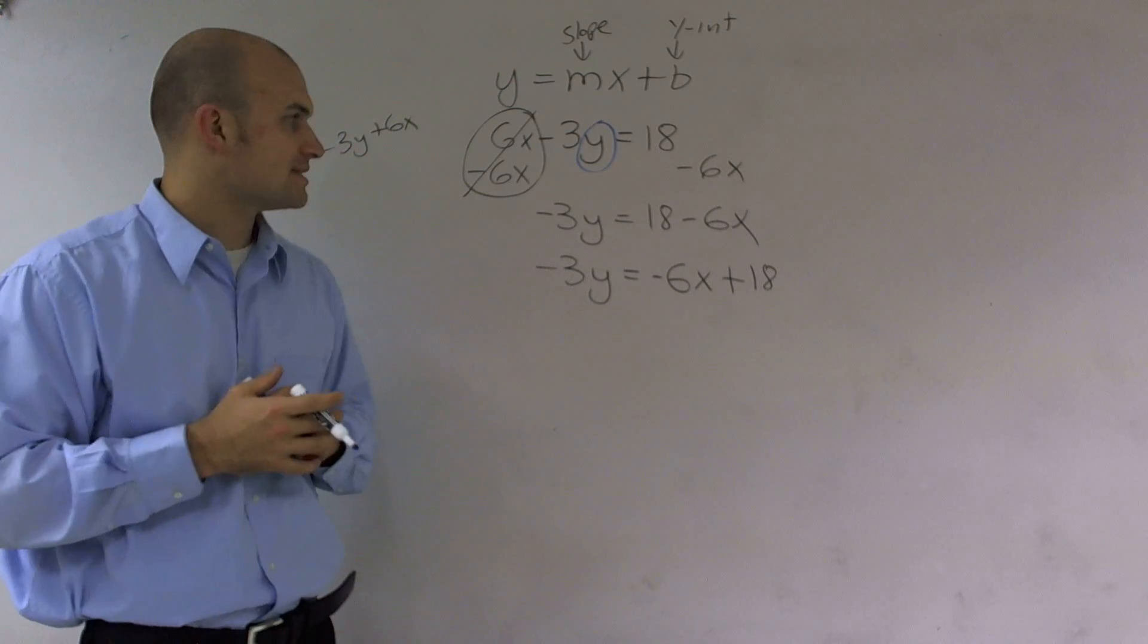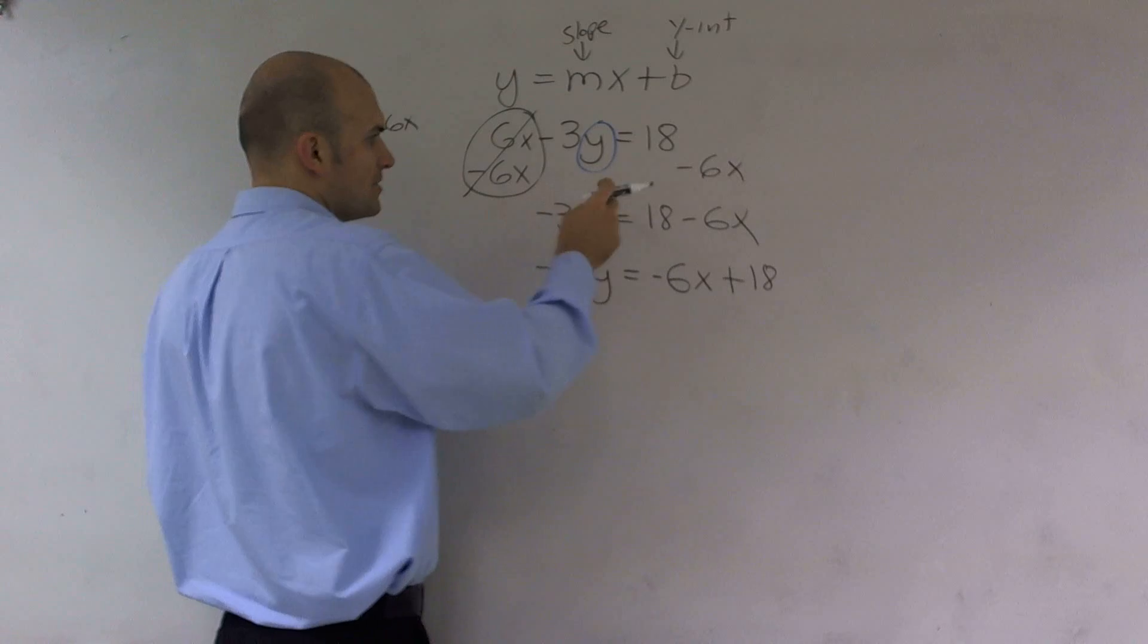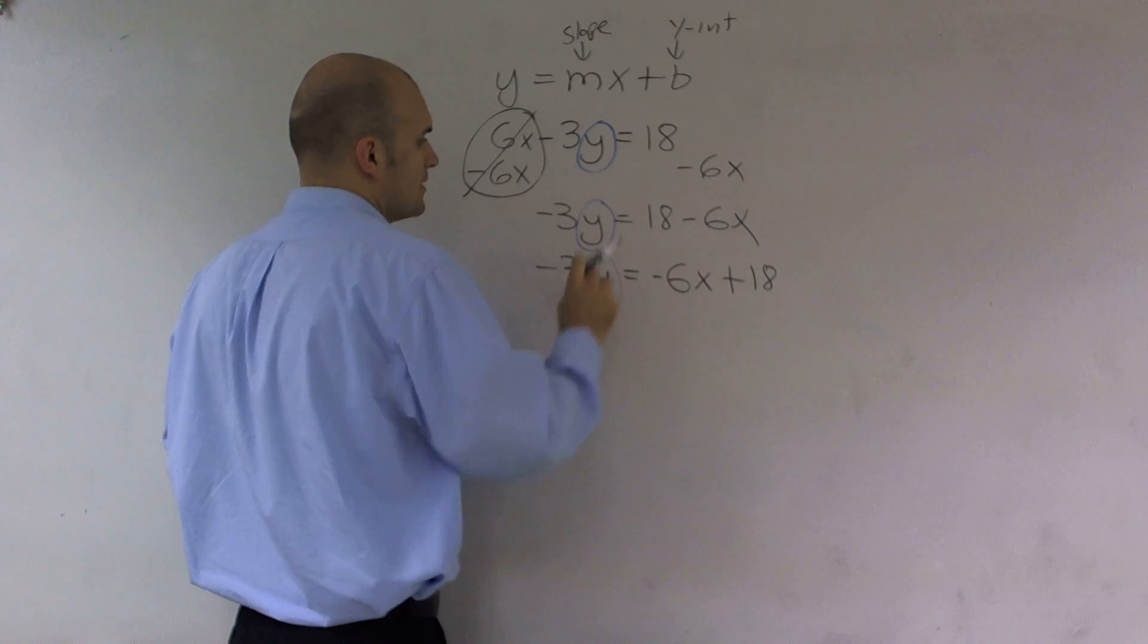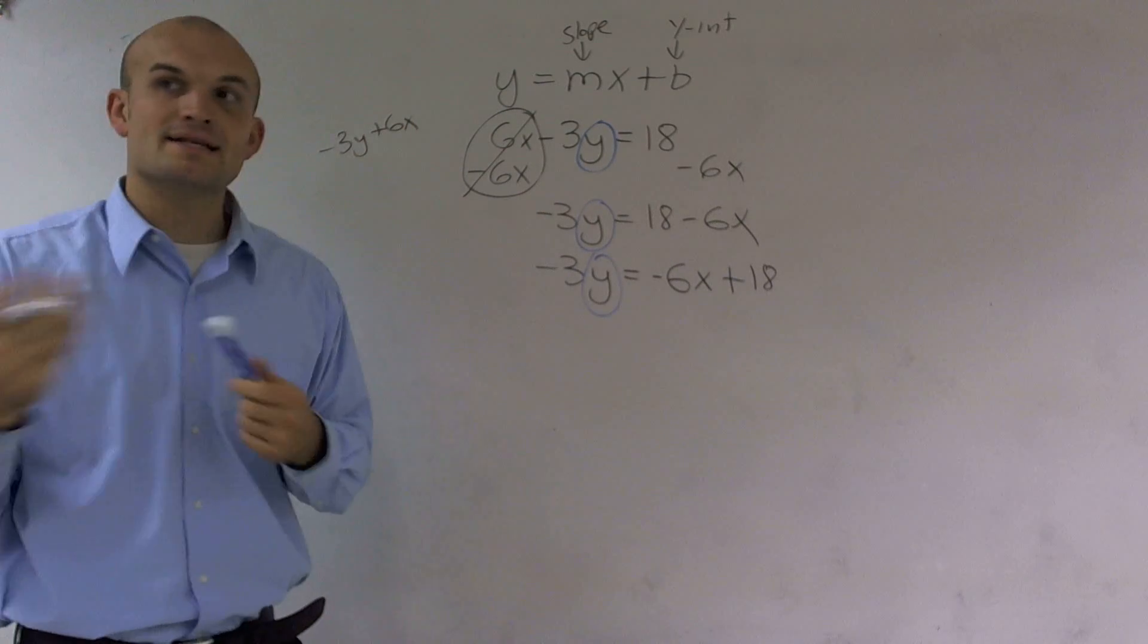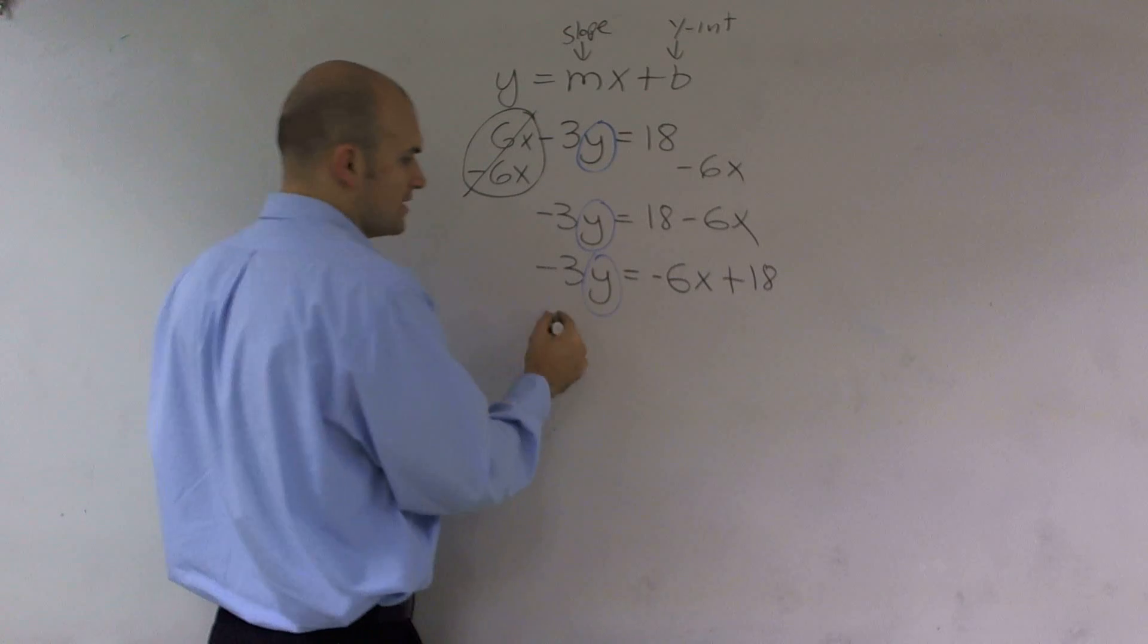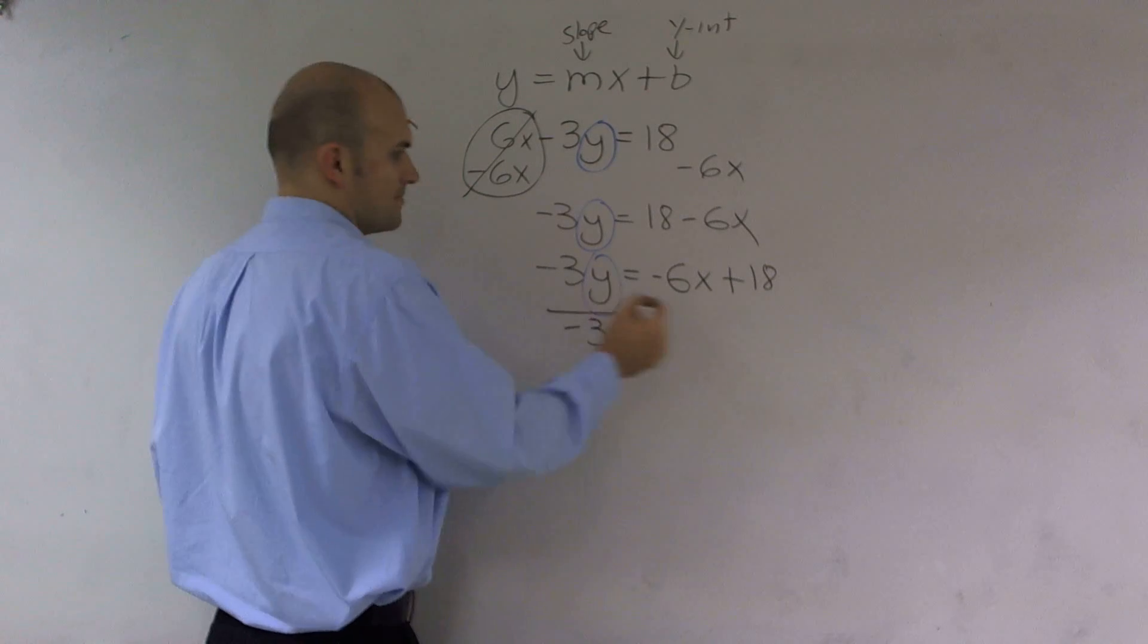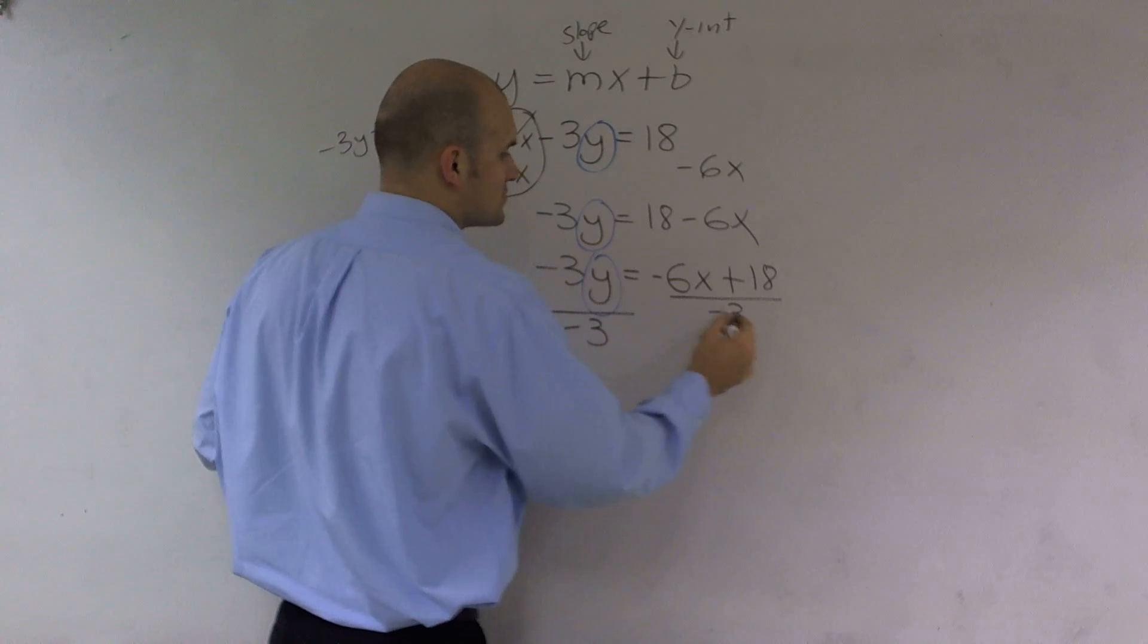Now, I need to get rid of this negative 3. Again, remember, I'm circling this. So now, since I'm multiplying by negative 3, to undo multiplication by negative 3, I'm going to divide by negative 3. And I divide by negative 3 over here as well.